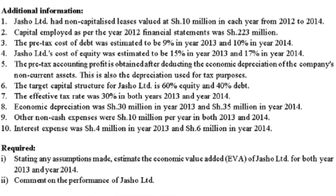Required: (i) stating any assumptions made, estimate the Economic Value Added for Joshua Limited for both 2013 and 2014; (ii) comment on the performance of Joshua Limited. So we are going to compute the EVA and then comment on performance, comparing the previous year and the current year.